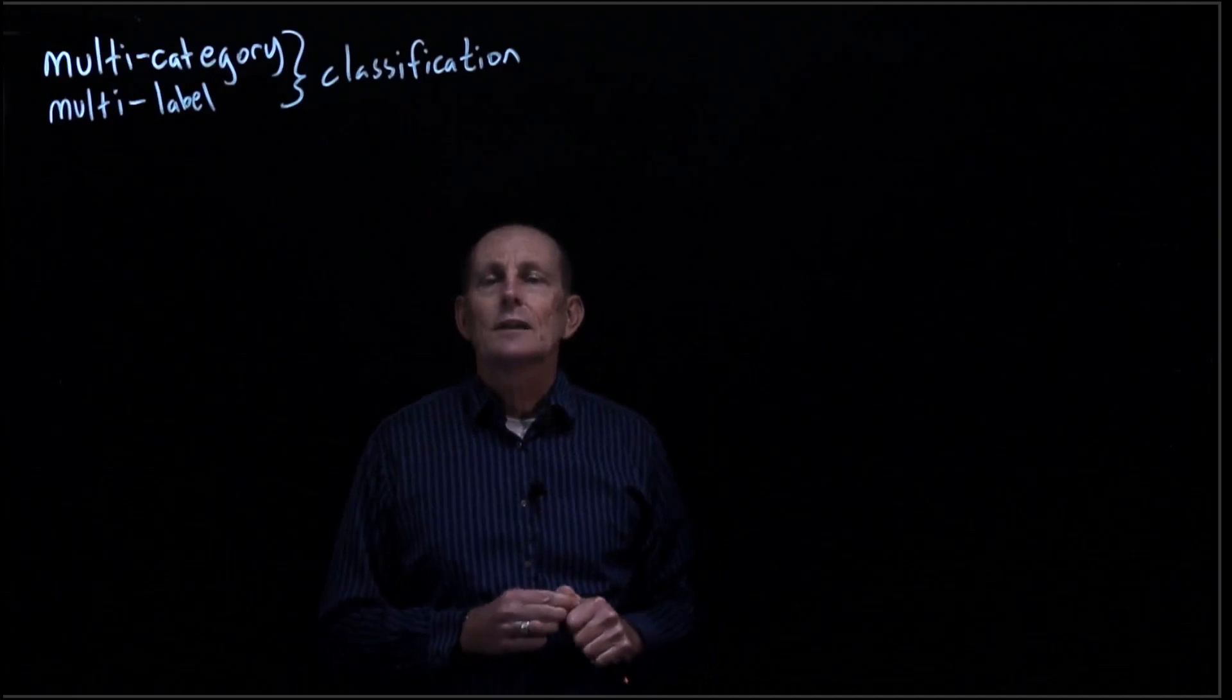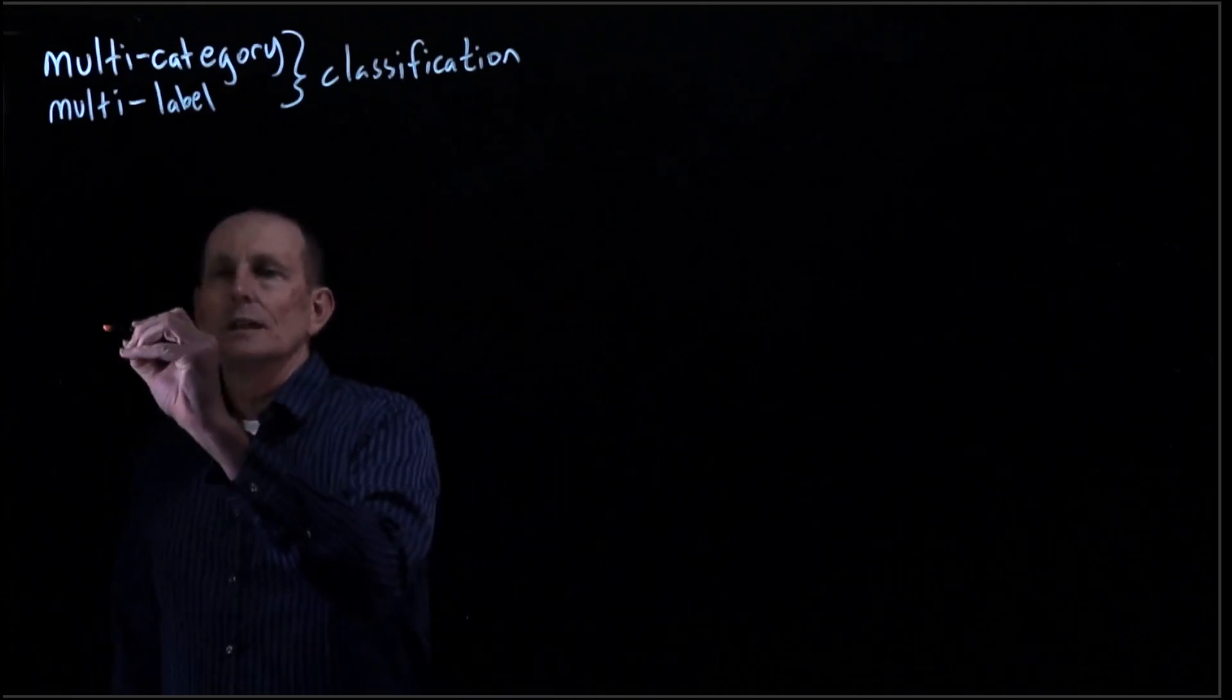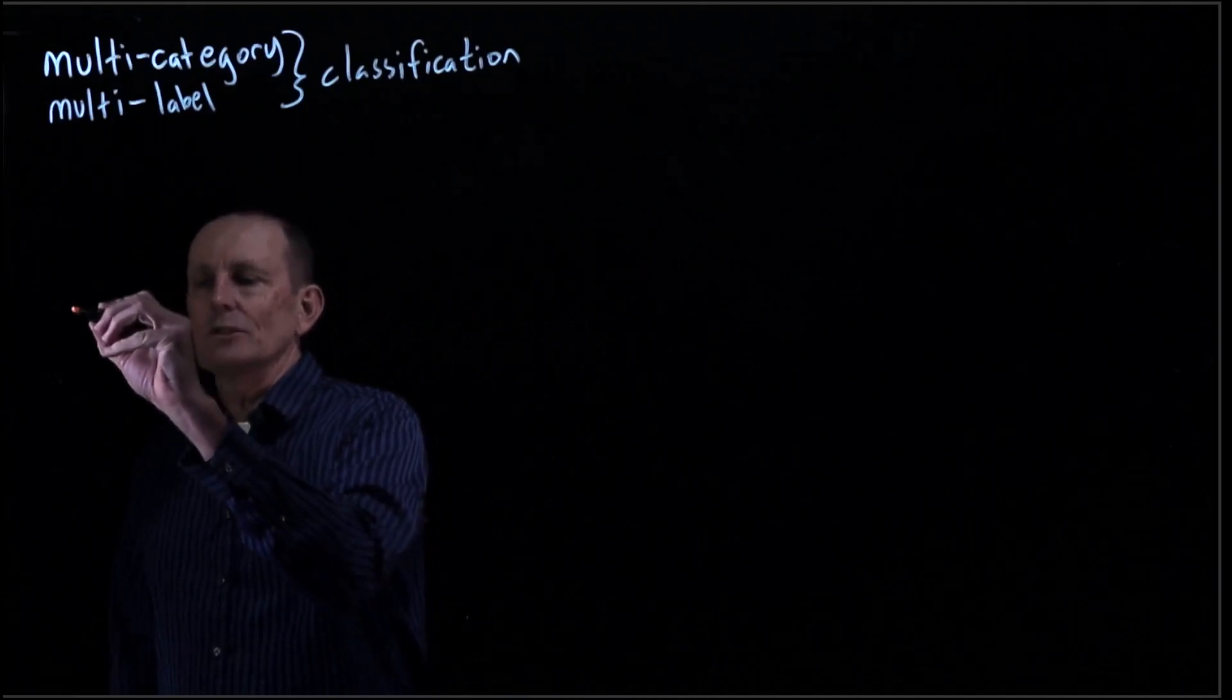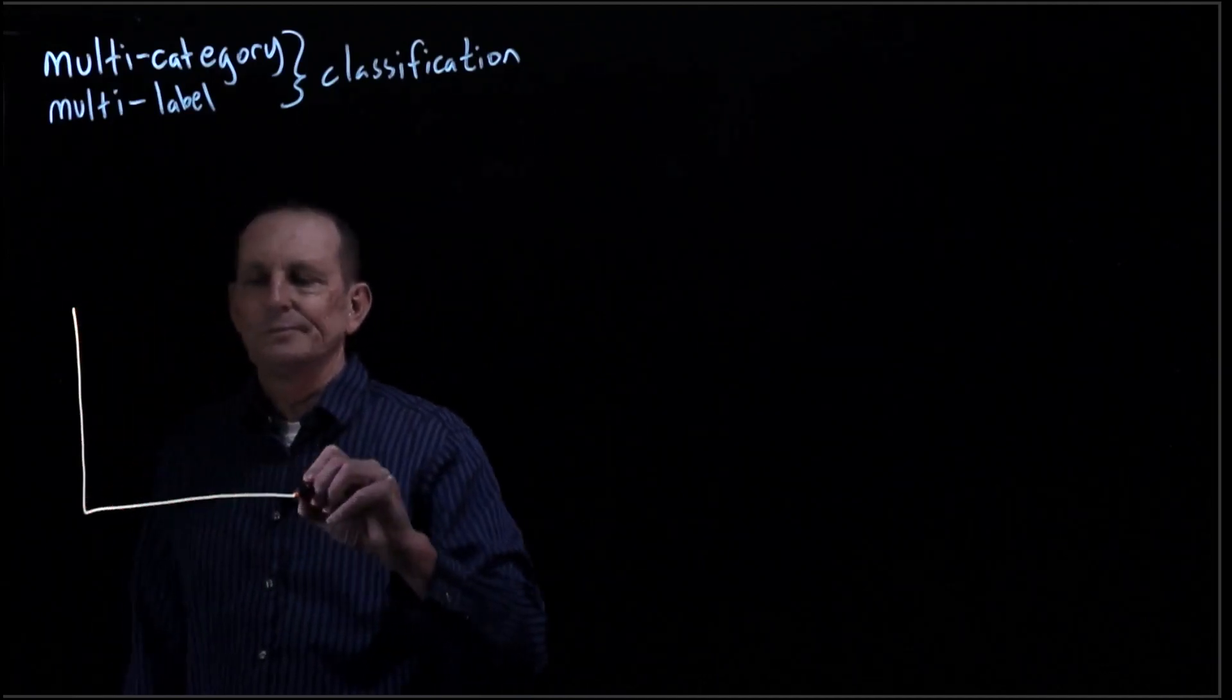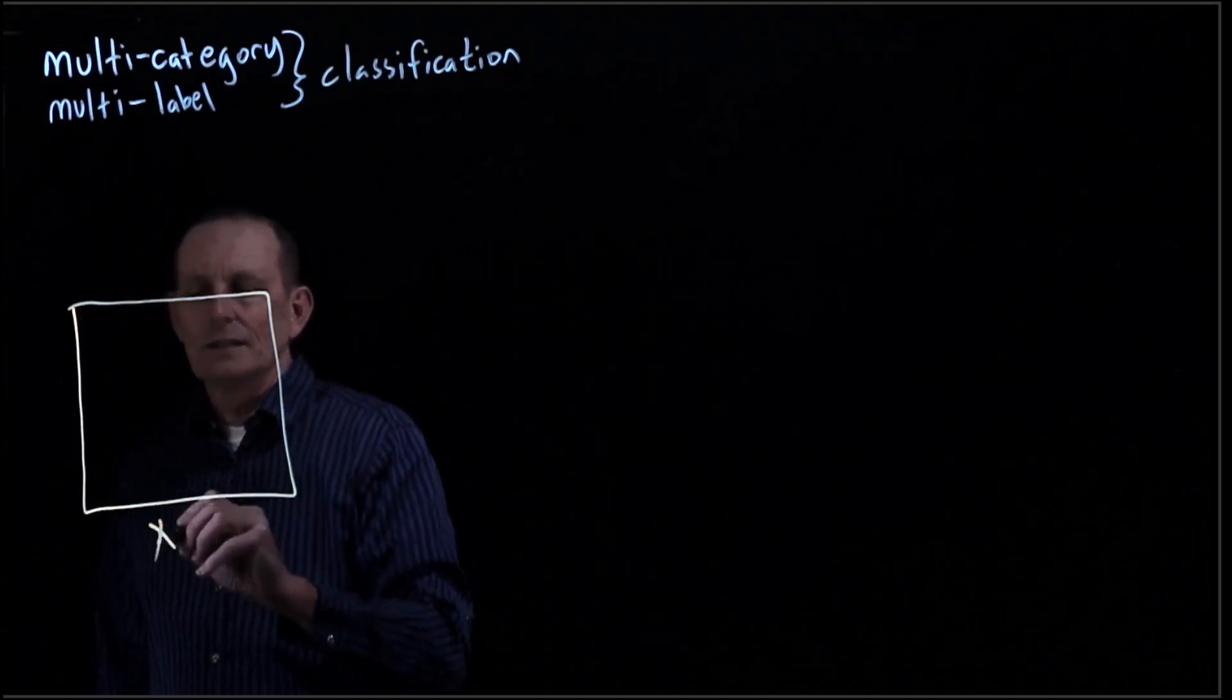Now let's look at an example of multi-label classification. So let's say we have a picture, and so our x is a picture.